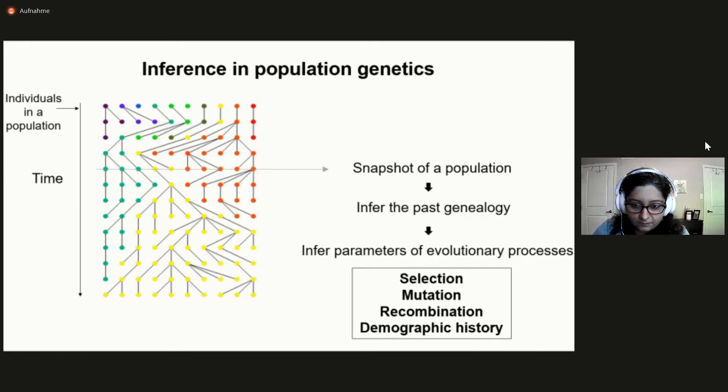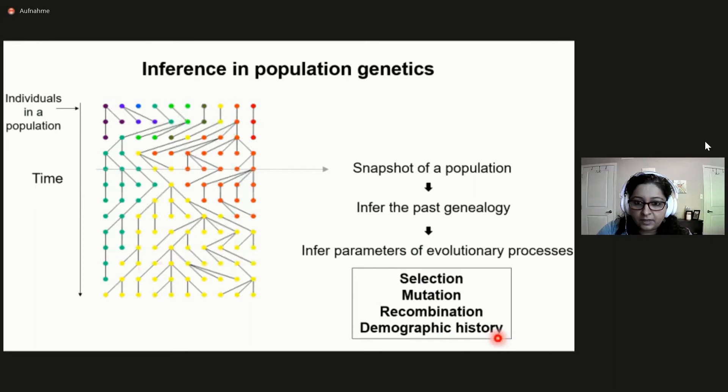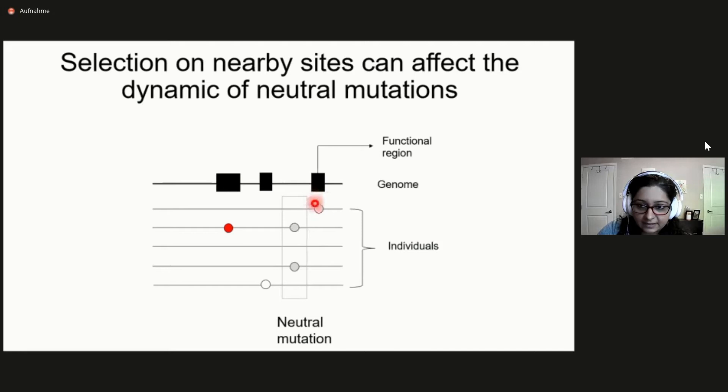All of these processes can leave somewhat similar imprints across the genome, and it has been a challenge to distinguish the individual effects of these evolutionary processes. One solution to distinguish selection from all these other processes has been to assume that selection only influences the trajectories of alleles at directly selected sites — that is, sites that are functionally important — while the non-adaptive processes affect all sites. So we can use non-functional, or neutral, sites to infer parameters of non-adaptive processes.